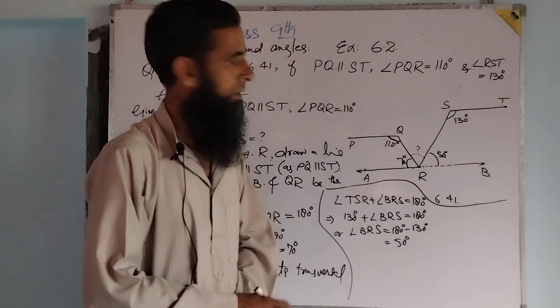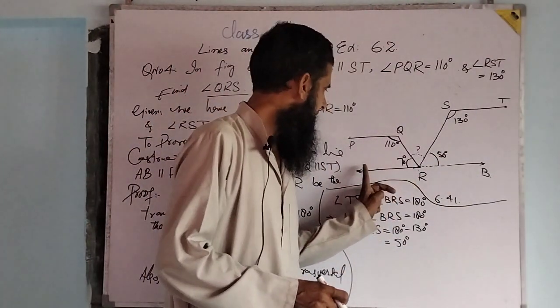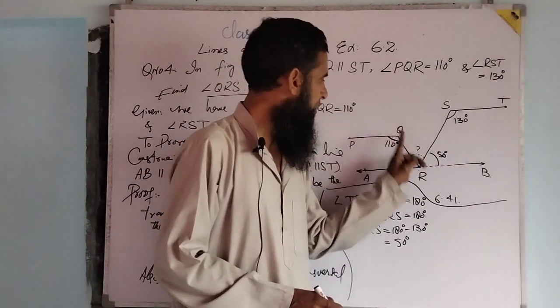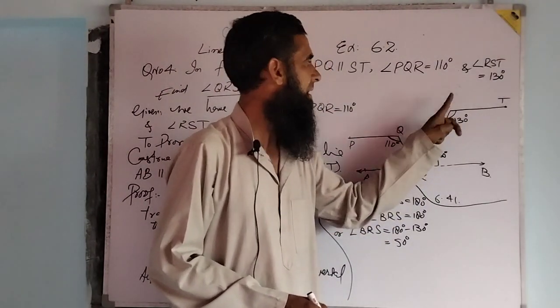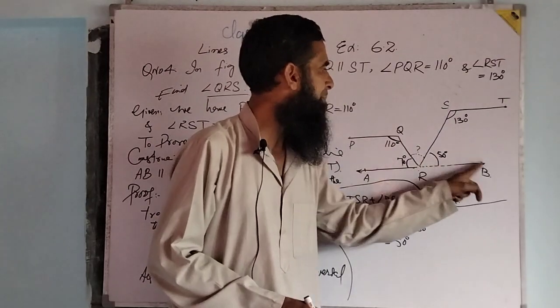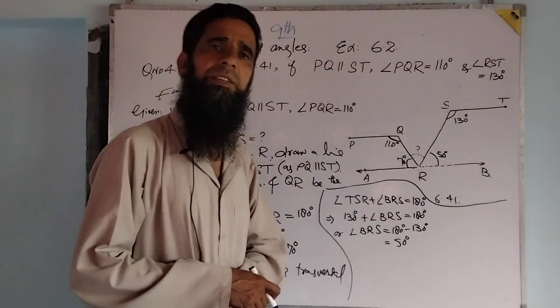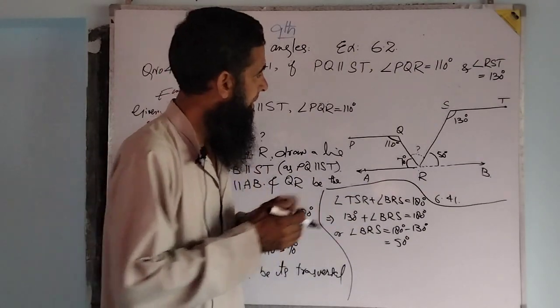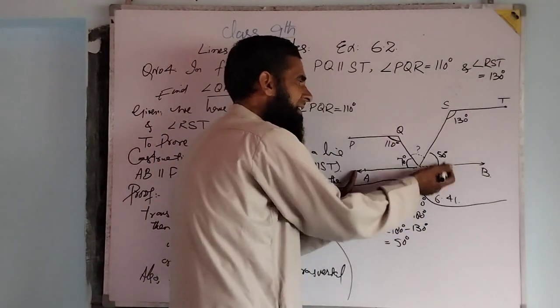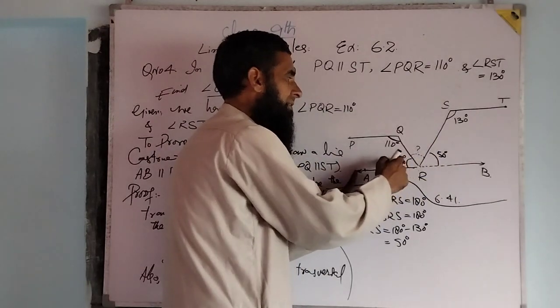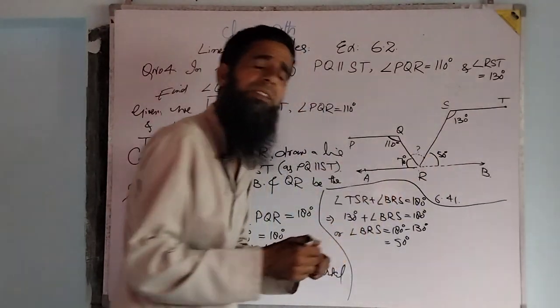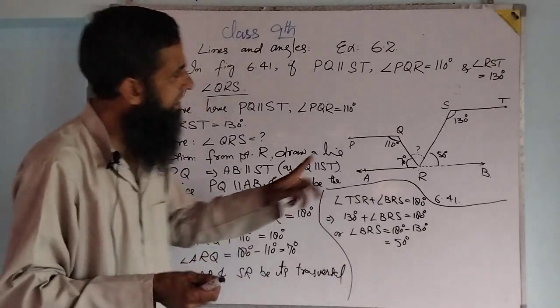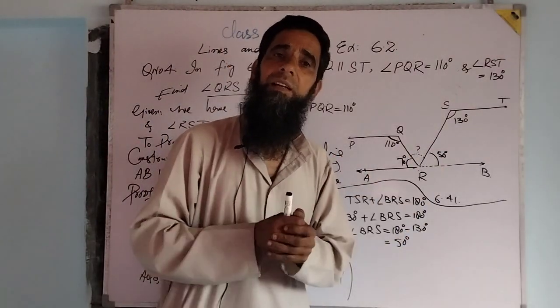Now, angle ARQ, angle QRS, and angle SRB, these three angles form a straight angle. That is, AB is a line and these three angles are formed by it. The sum of these three angles is 180 degrees, or we can say these three angles are linear pair angles.